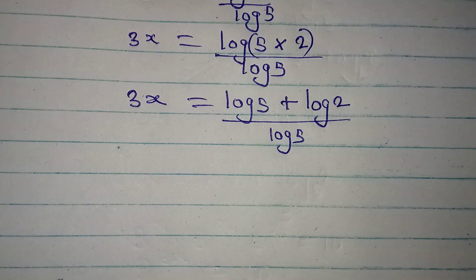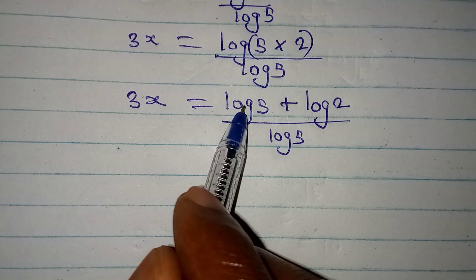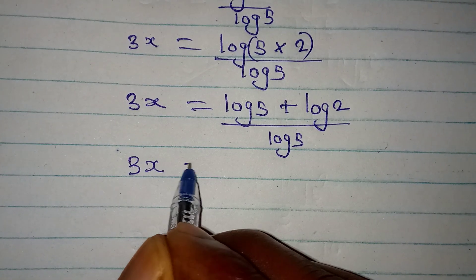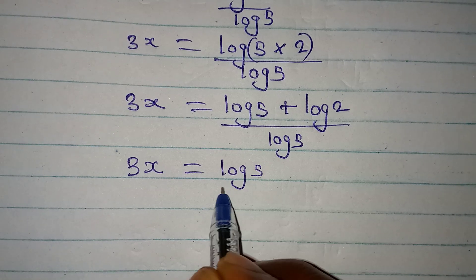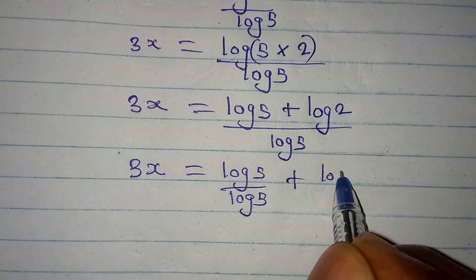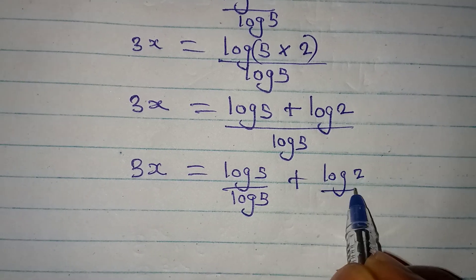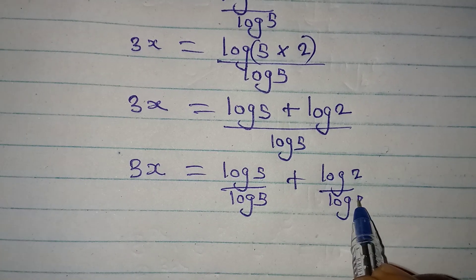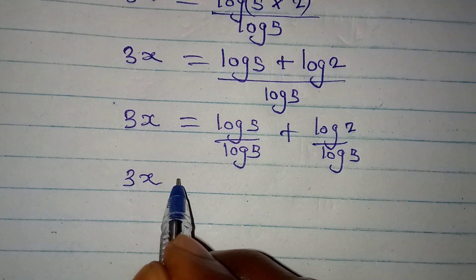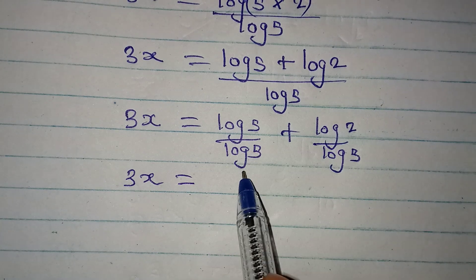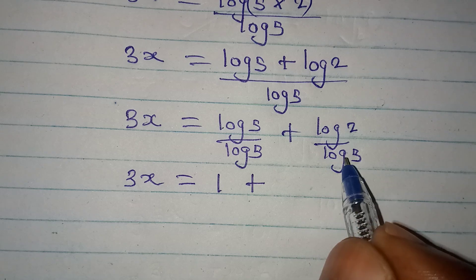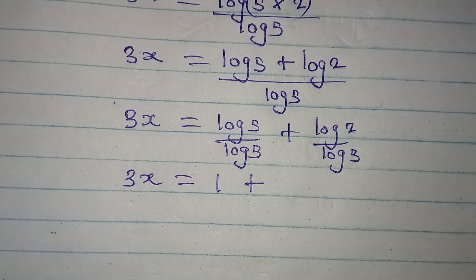See what I will do. 3x is equal to log 5 over log 5 plus log 2 over log 5. 3x here will be equal to log 5 divided by log 5 will give 1. Then plus here we have log 2 to log 5.